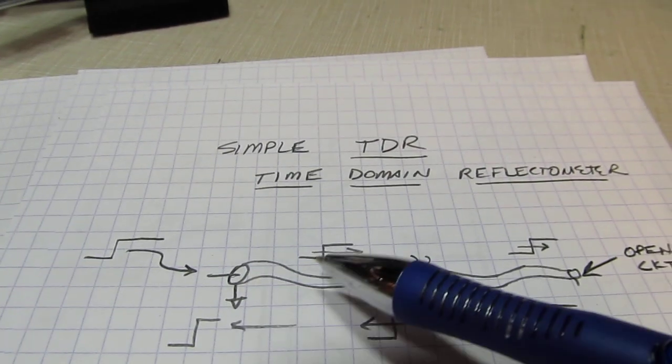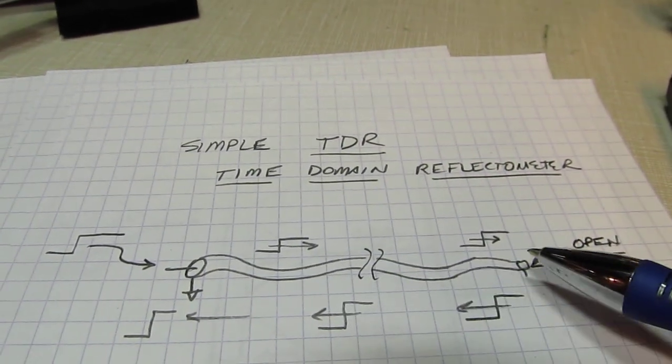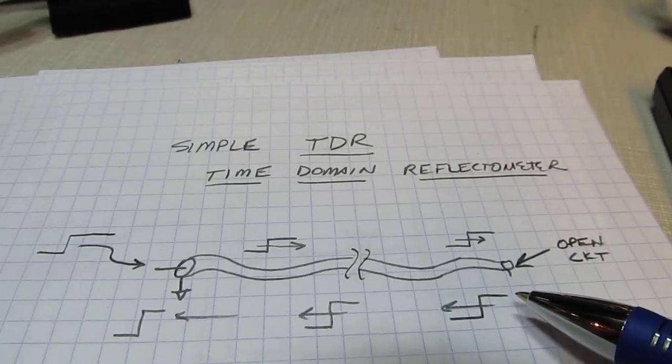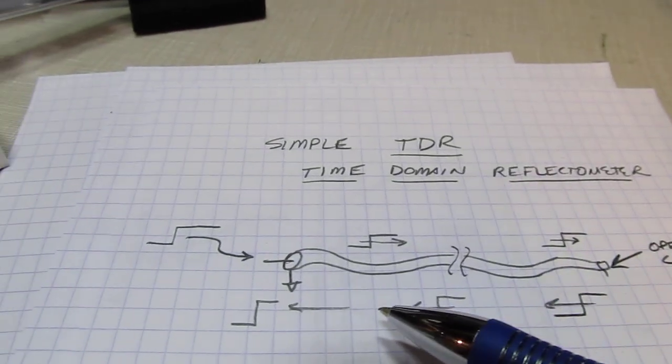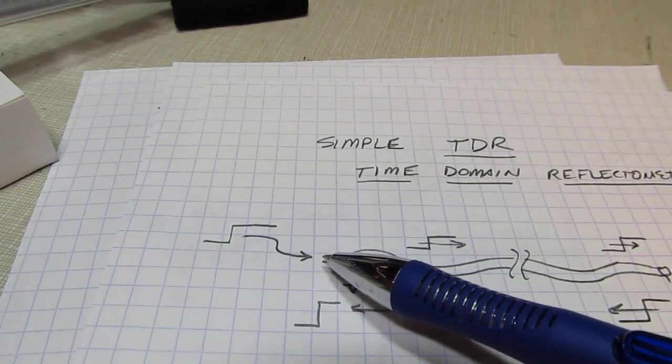That pulse would propagate down through the coax, and if the coax was open at the other end, the signal would reflect back. As it reflects back, it would eventually reach back at the driving point.